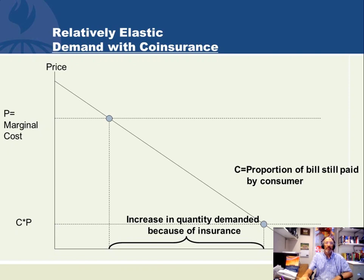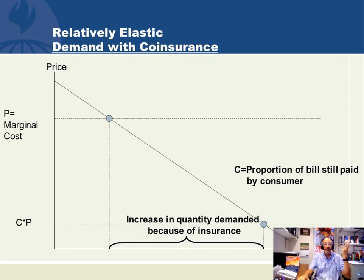If we say to that patient: you have insurance — go for it — you only have to pay the copay times price. Your actual price is now all the way down here. Given their demand curve, what used to be a high-priced product now costs them the copay — let's say 10% of the former price. So this is their new supply curve that they're facing, and they shift their consumption all the way up from low to high. This is the increase in the quantity demanded because of insurance. This is moral hazard in action — because they are insured, they use more services.